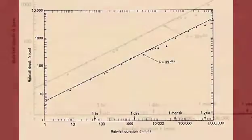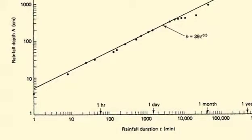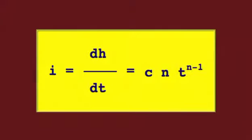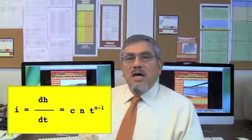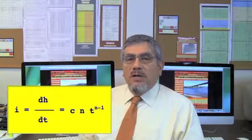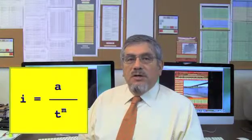The depth-duration data for the world's greatest observed rainfall events is shown. Differentiating rainfall depth with respect to duration gives rainfall intensity i. Simplifying by replacing constants where a equals cn and m equals one minus n, it follows that rainfall intensity and duration are inversely related.